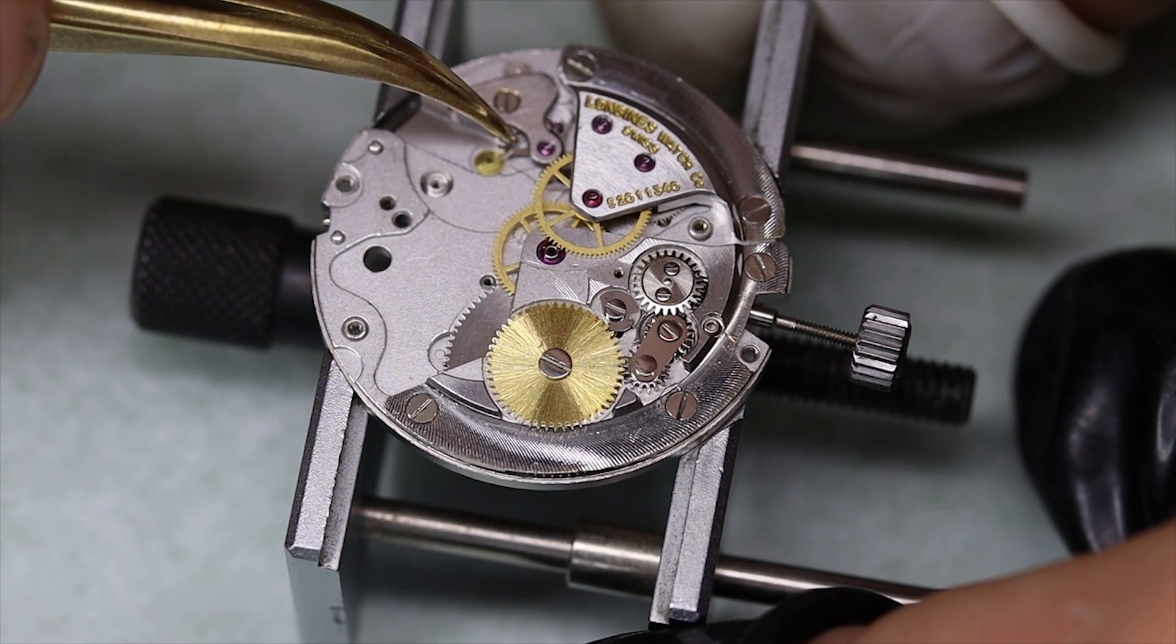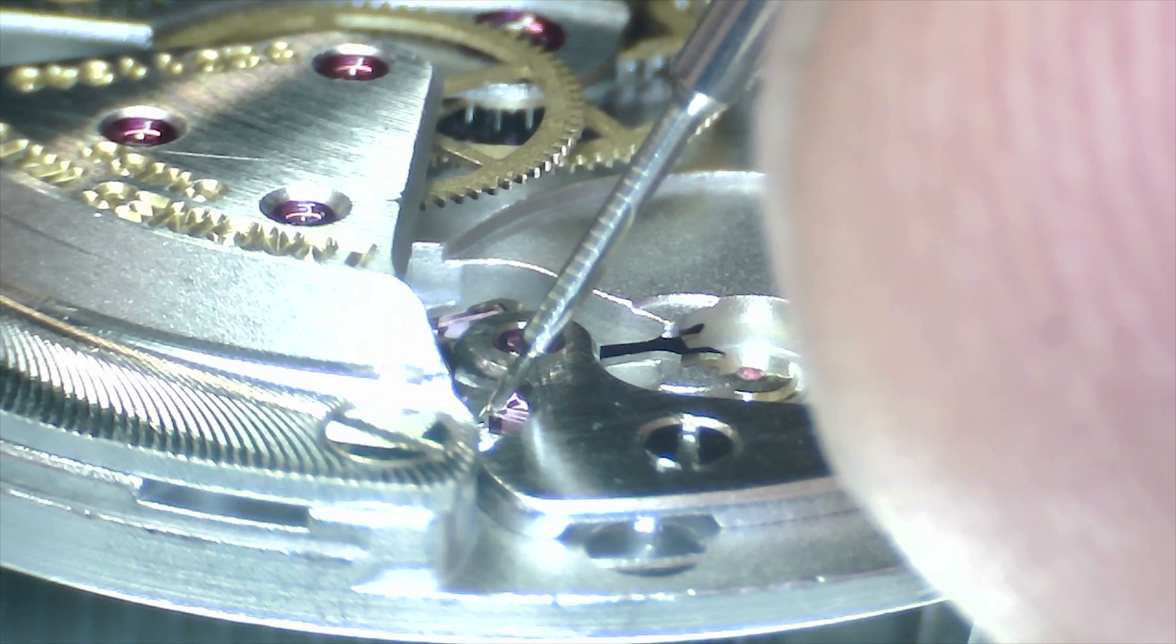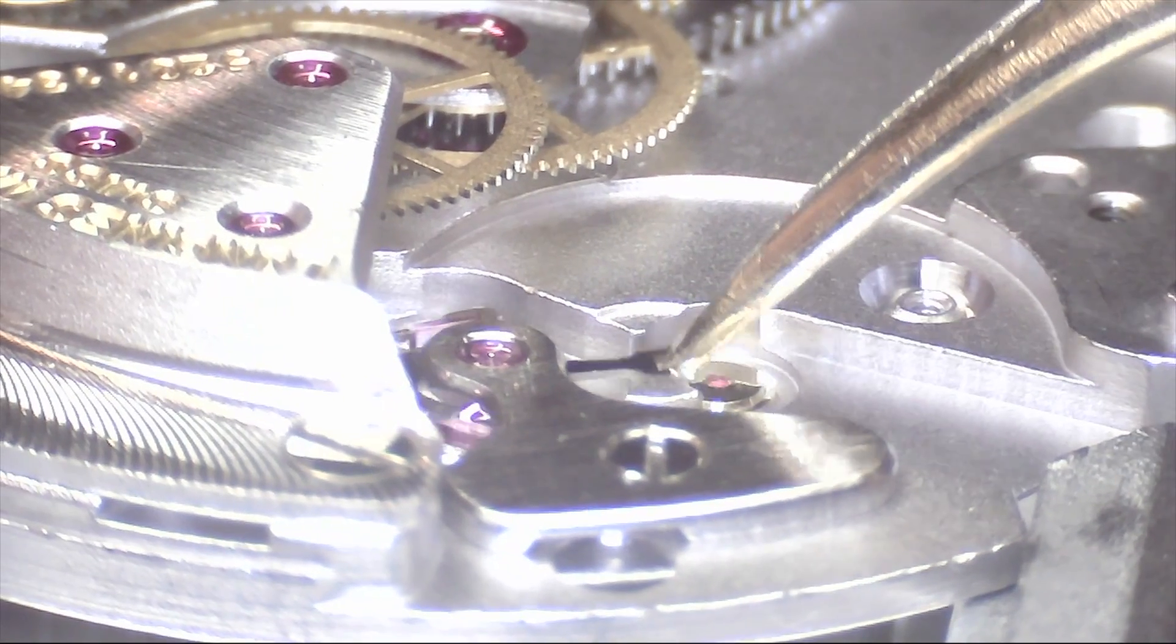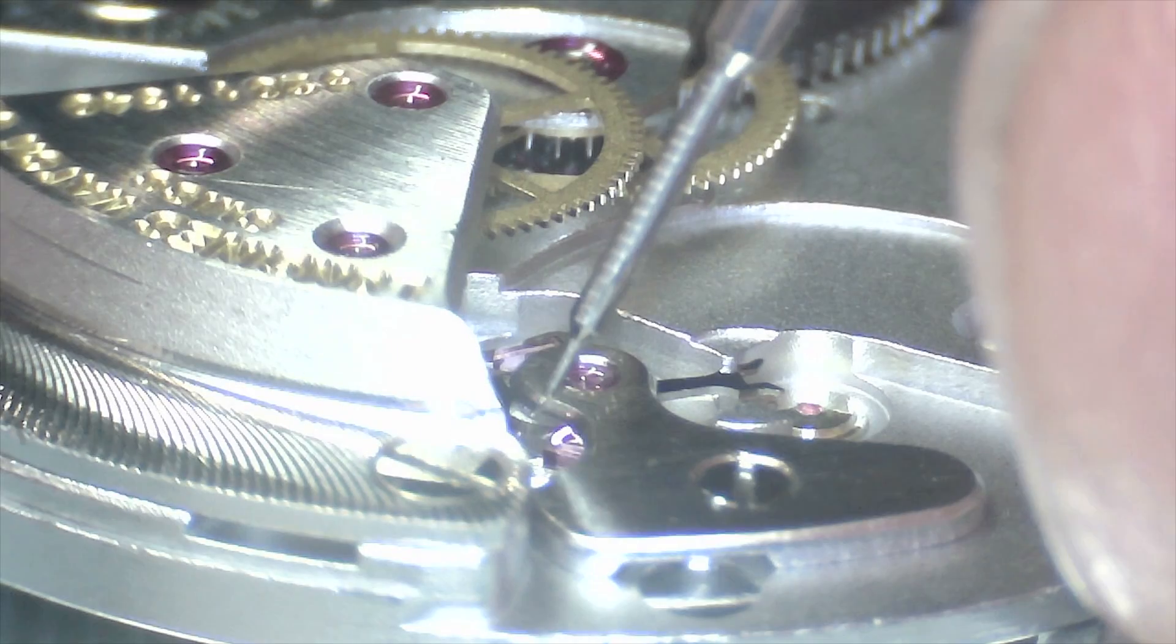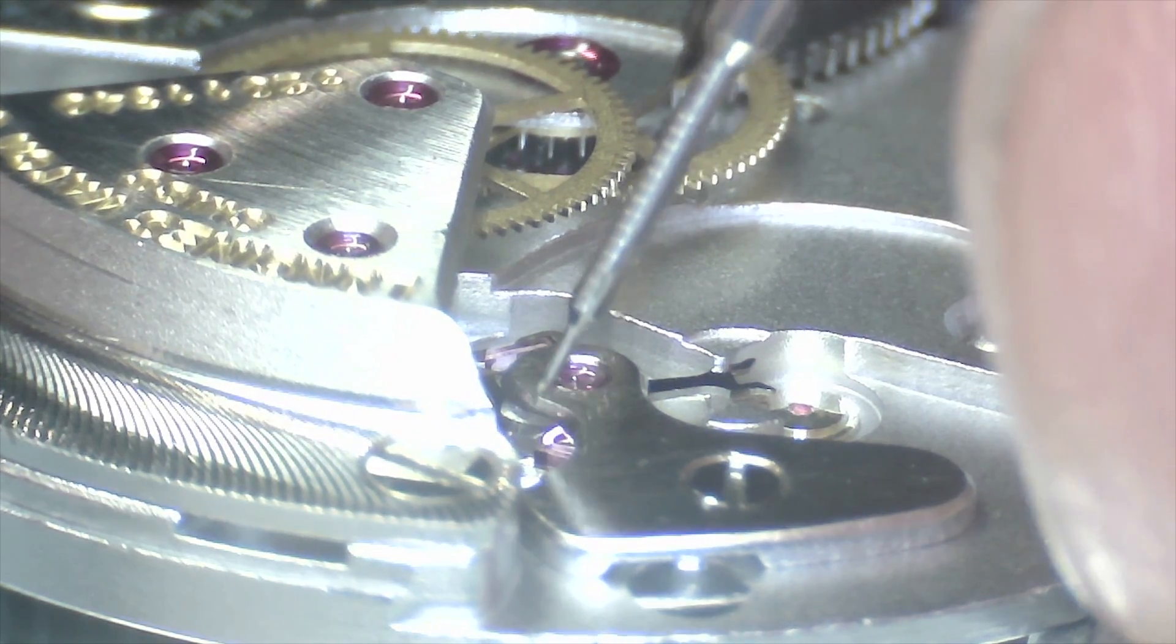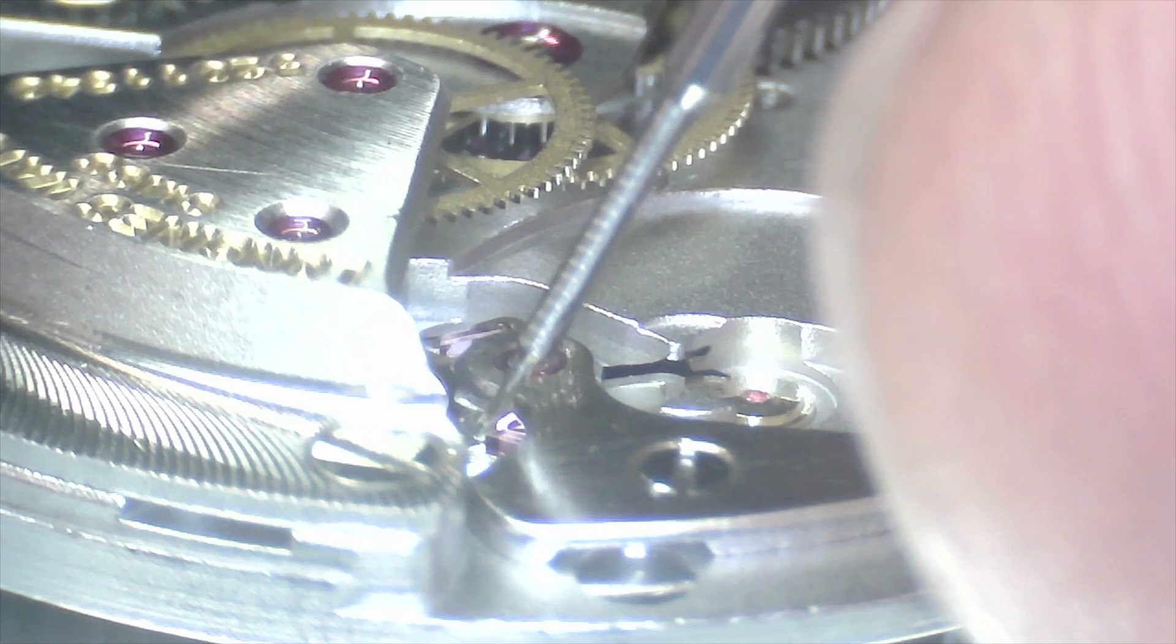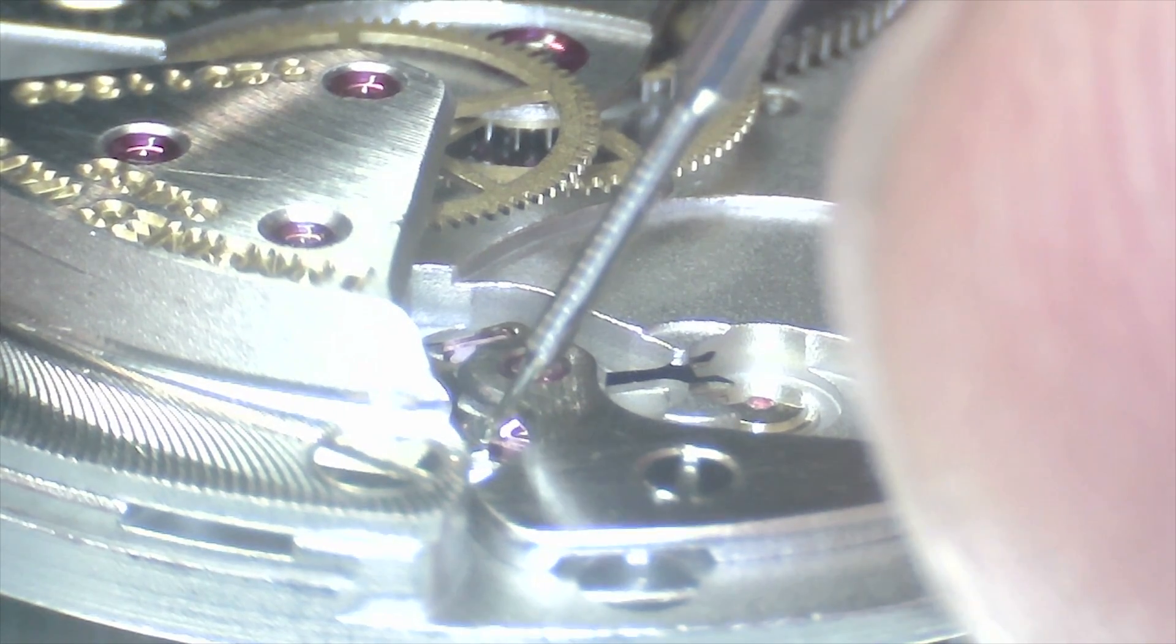All right, we put the pallet fork in, put a little bit of power on the mainspring and then we can oil the exit pallet. And when I say oil I mean grease. Given that this is a high speed movement we need to use grease on the pallet stones. In lower beat movements we can use oil, so 9041, but here we're going to use 9415.